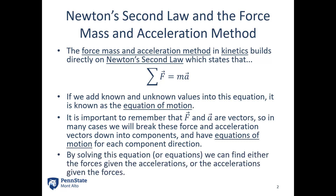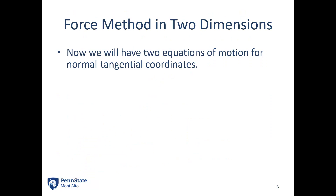By solving these equations, we can find the forces given accelerations or find the accelerations given the forces. We can go back and forth between those using our F equals MA relationship. In two dimensions, we're going to have two equations of motion: the sum of forces in the normal direction equals mass times acceleration in the normal direction, and the sum of forces in the tangential direction equals mass times acceleration in the tangential direction.